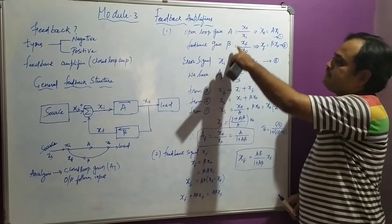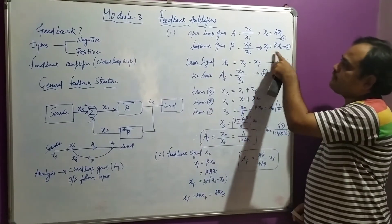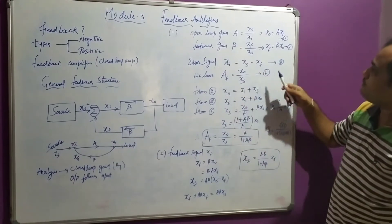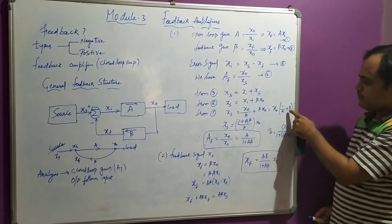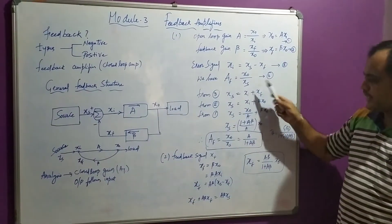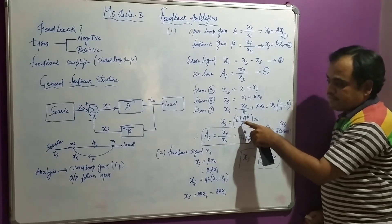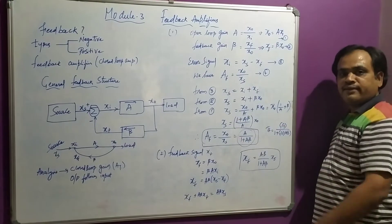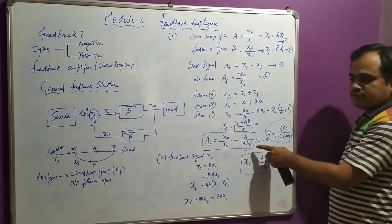Now we find the closed loop gain AF, which is X0 by XS. Using the three equations: from equation 3, XS equals XI plus XF. Substituting XF equals beta times X0 from equation 2, and XI equals X0 divided by A from equation 1, we get XS equals X0 times (1 plus A·beta) divided by A. Therefore AF equals X0 divided by XS equals A divided by (1 plus A·beta). This looks like the control system transfer function G(S) divided by (1 plus G(S)·H(S)).